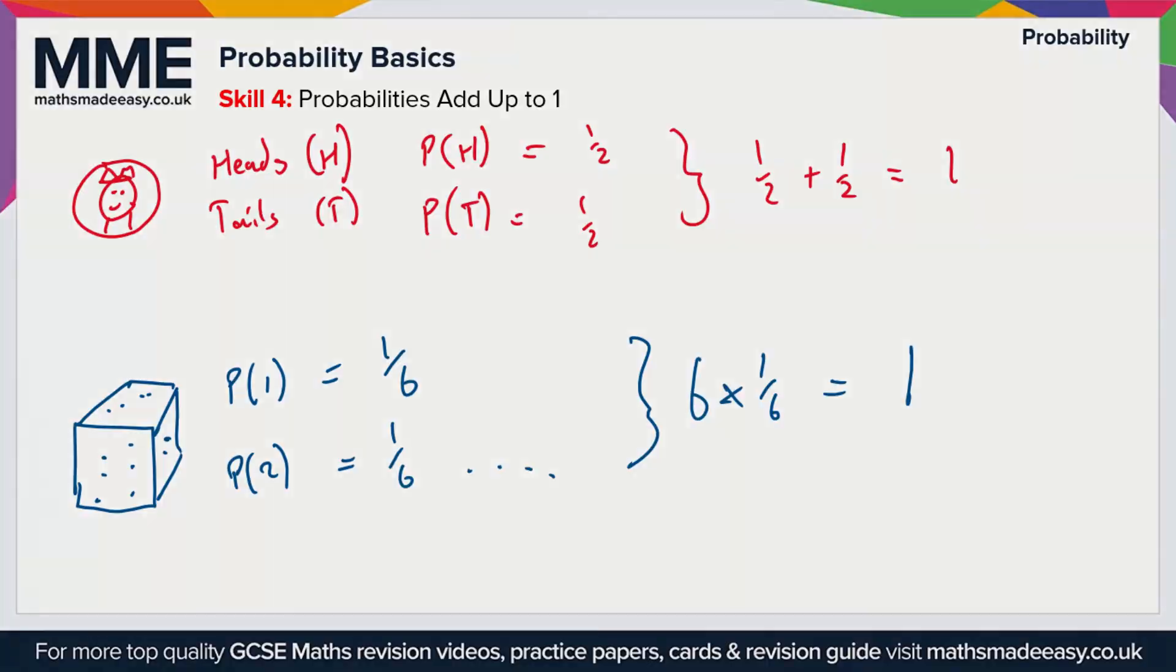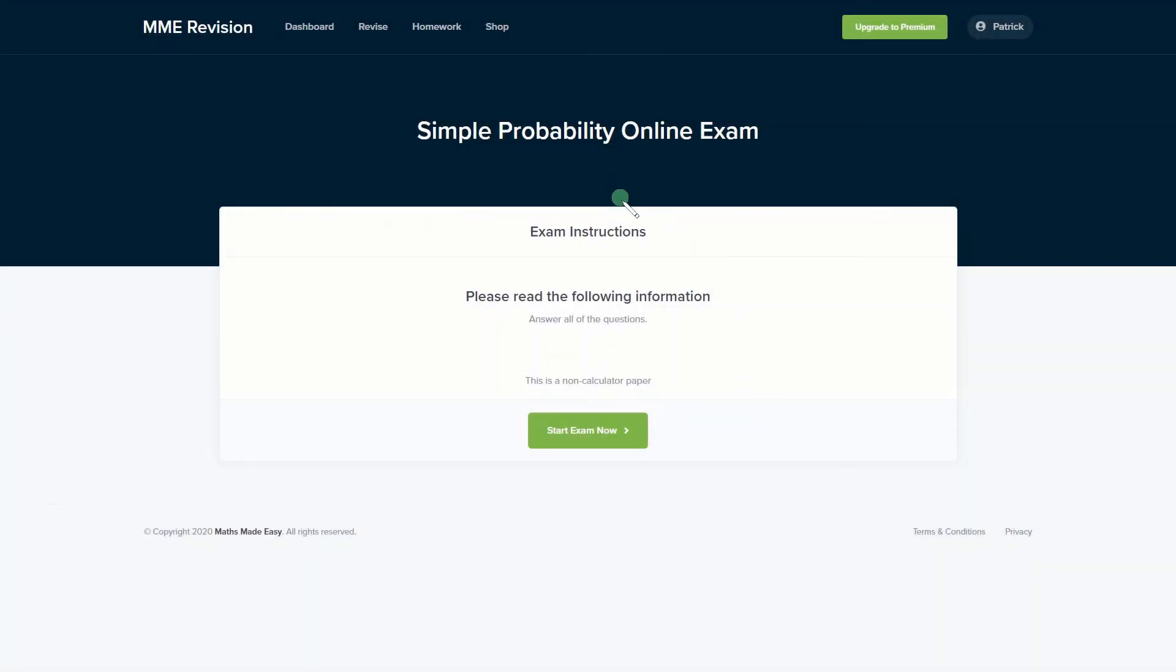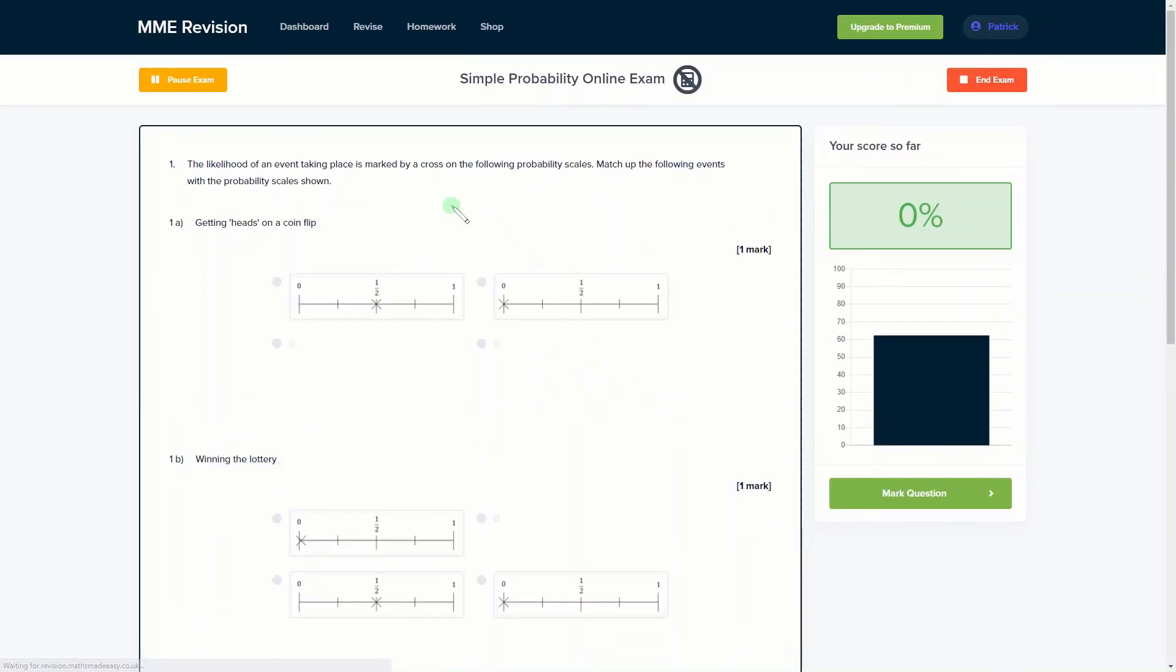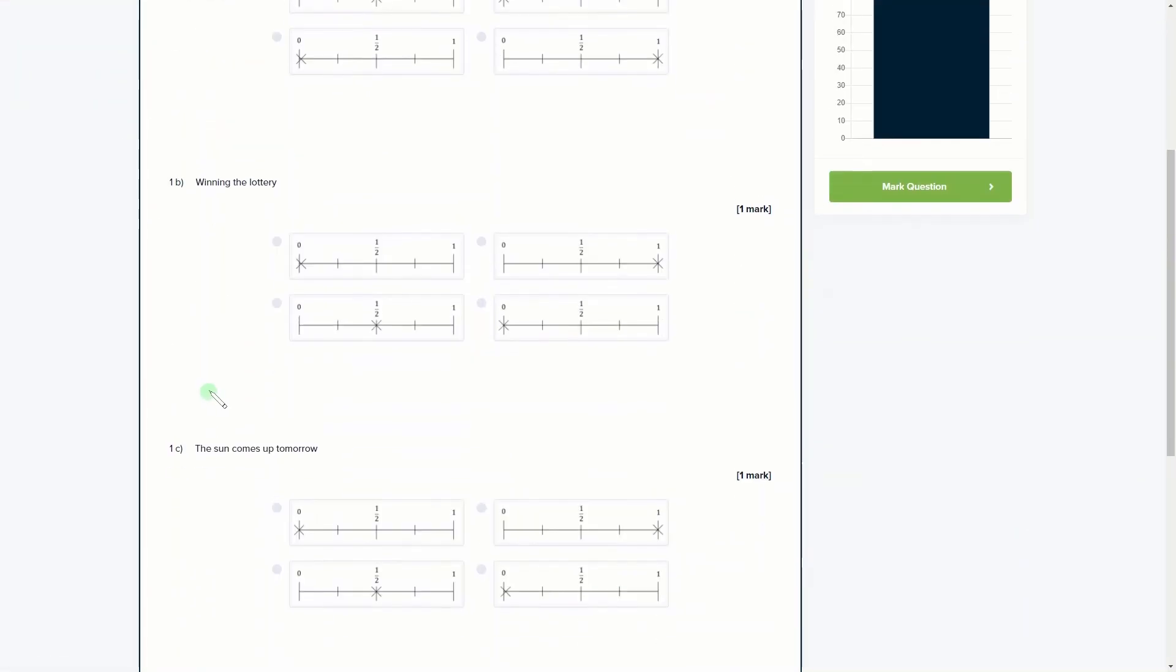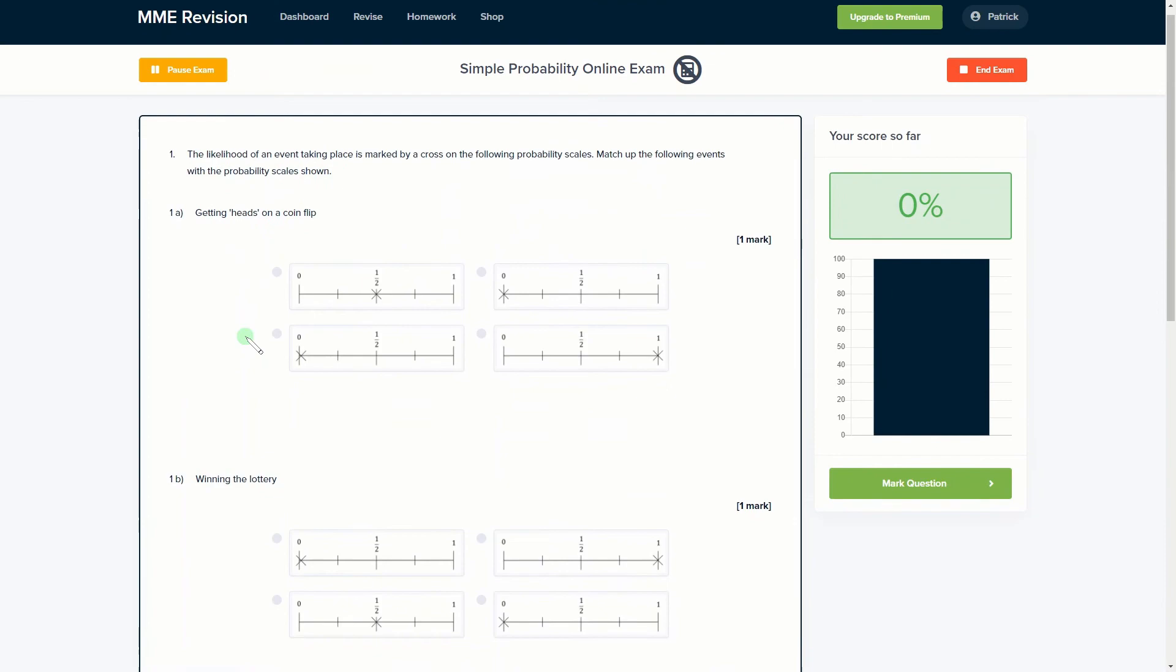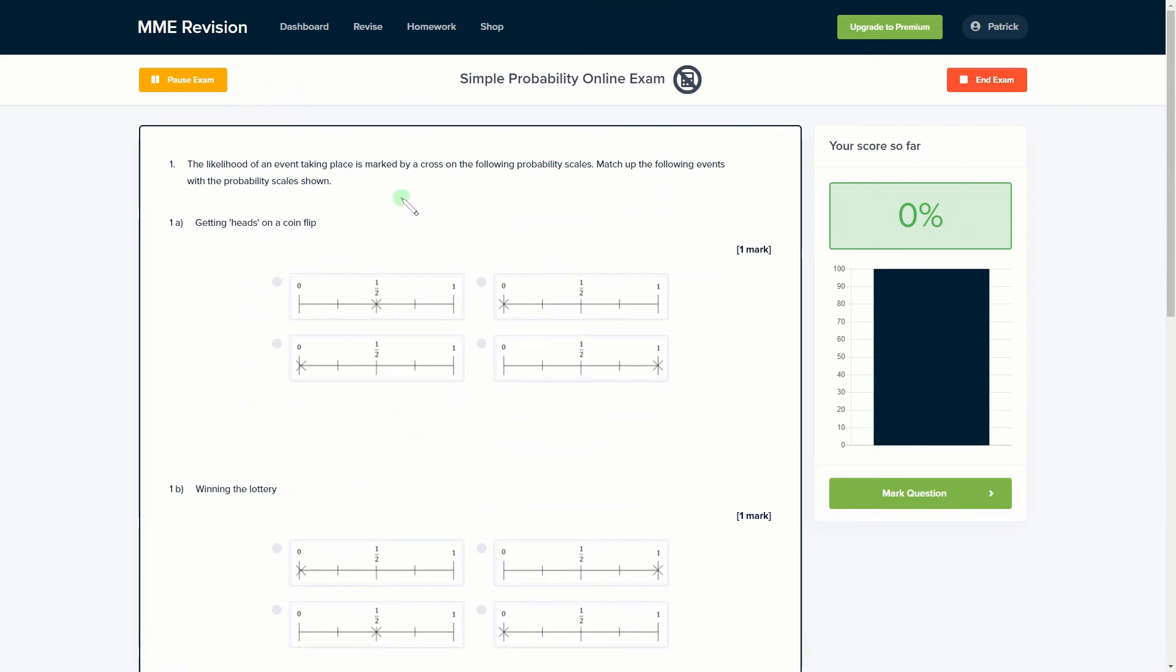So if you feel ready to tackle some probability questions, then why not have a go at our online exam? It's available through our revision platform, and if you take the test you'll find loads of different questions, a variety of different question types, and you get instant feedback on all of them. So you can keep track of your progress, find out where you need to improve, and so on. So if you're interested, then click the link below. It will take you straight over there.